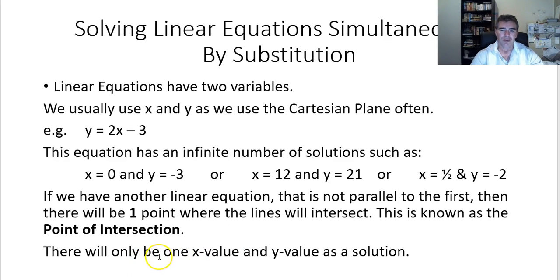When we do have that point of intersection, there is only one x value and one y value that gives us a solution. And the method that we're going to focus on is the substitution method to give us that particular solution.